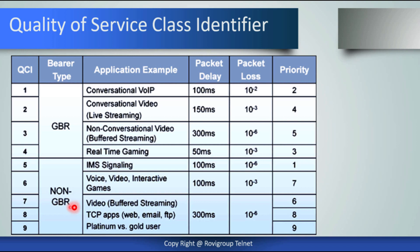In the non-GBR category, we have IMS signaling, voice, video, interactive games, buffered streaming, TCP applications, web browsing, email, and FTP — all using non-guaranteed bit rate. These services have defined packet loss values and different scheduling priorities.